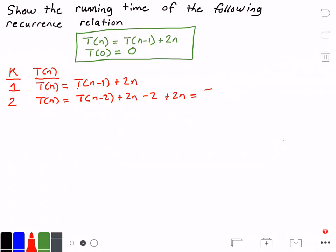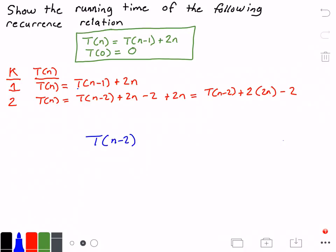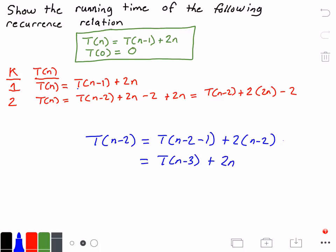Let's simplify that a bit: t(n) = t(n-2) + 2·2·(n-2). Now we need to figure out what t(n-2) is, by doing the same substitution. So t(n-2) = t(n-2-1) + 2(n-2), which simplifies to t(n-3) + 2(n-4).